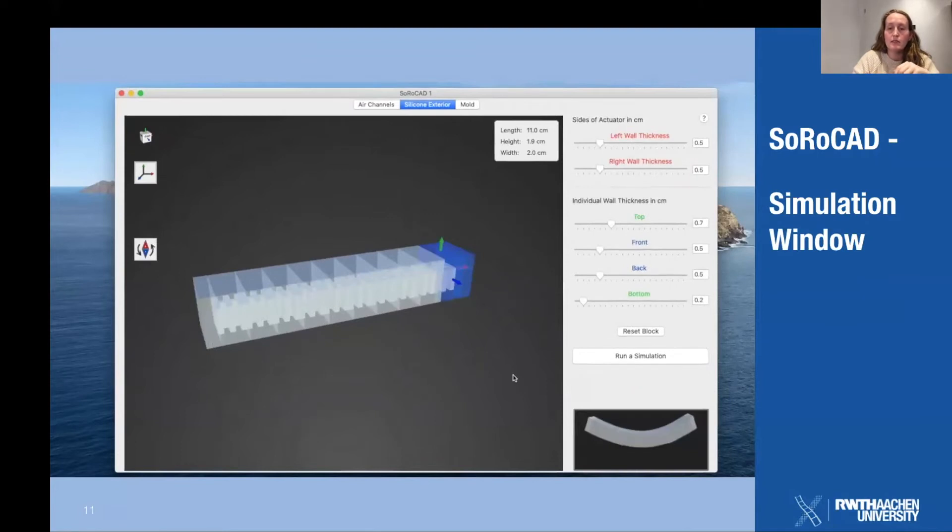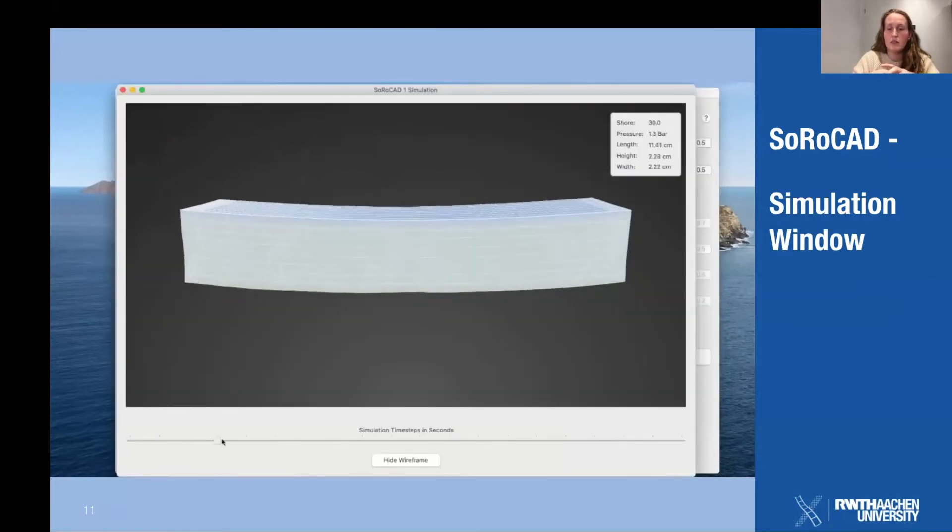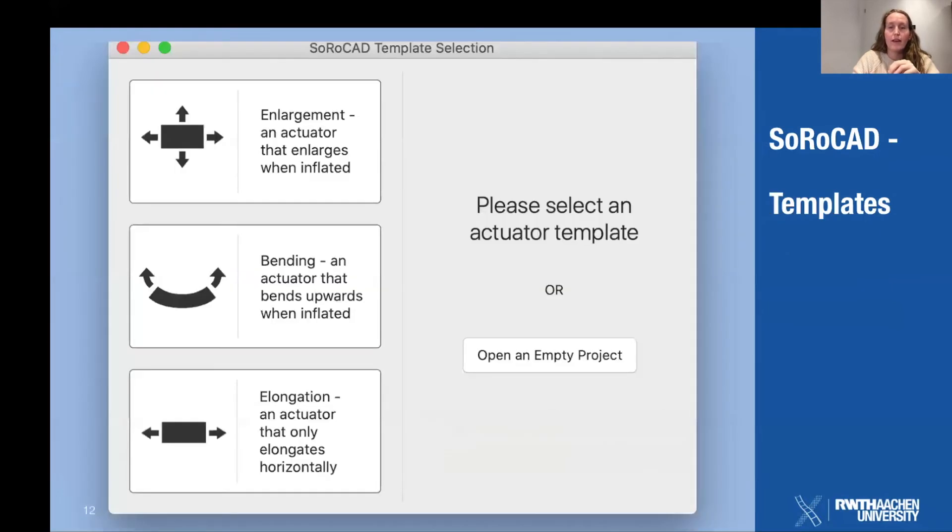This simulation drastically reduces the trial and error process when building soft robots, since the user can test whether the actuator moves as intended without having to build it each time. As mentioned, soft robots are tricky.